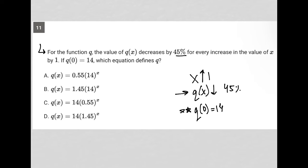So this is telling me that when x is 0, q(0) should be 14. If I put a 0 here, this whole thing will become 0.55 times 1, that's not equal to 14. So choice A is gone. Same thing would happen here - this all will become 1, that's 1.45, not 14. So choice B is gone.